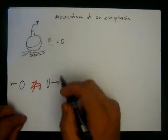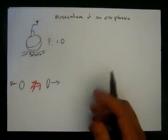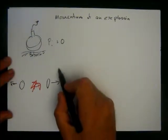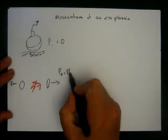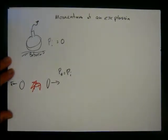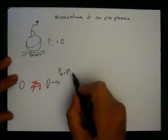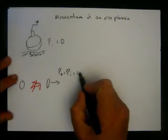From conservation of momentum, if there's no external forces, and an explosion is not an external force, P_f equals P_i. That means that the total momentum of the system is going to equal zero.